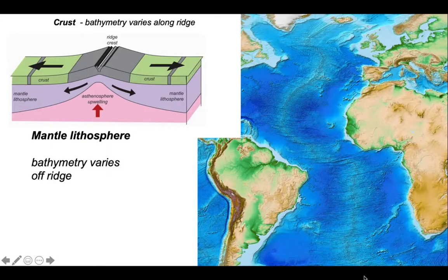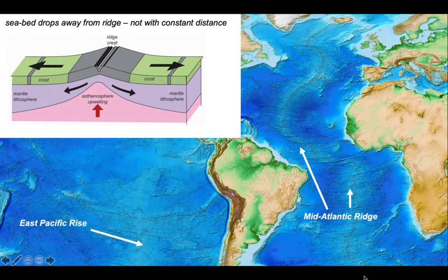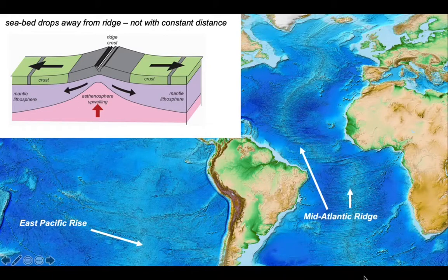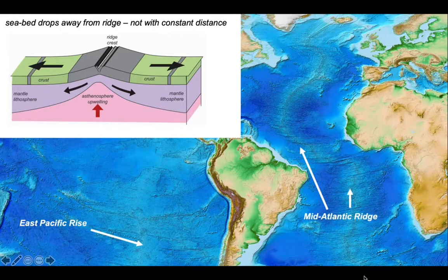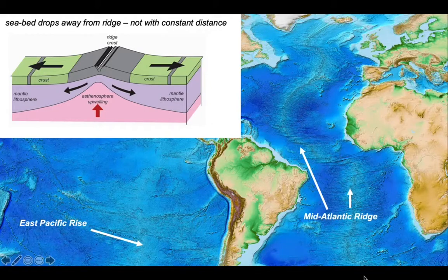A key feature of the oceans is that the bathymetry varies off the mid-ocean ridges. Fairly obviously, otherwise they wouldn't be ridges. We can pick this out if we look further afield at the mid-Atlantic ridge and the East Pacific rise. These have rather different form. The sea bed drops away from the ridge in both cases, but it's not a constant relationship with distance. What does the bathymetry relate to if it's not simply distance from the ridge?